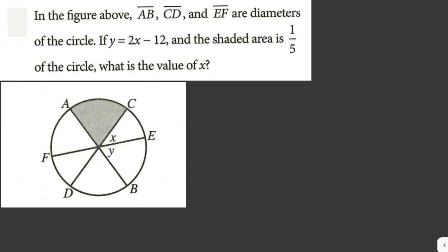Since it is given that segment AB, segment CD, and segment EF are diameters of the circle, therefore the sum of the angles x, y, x, y, and the angle of the shaded region should be equal to 180 degrees.